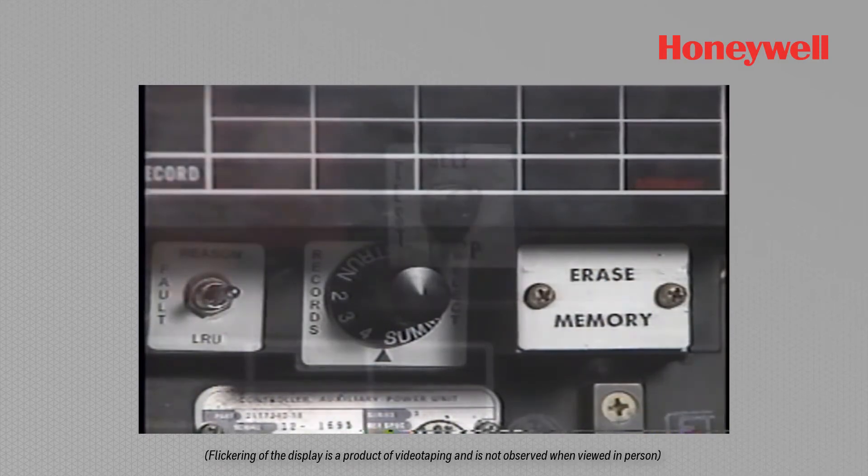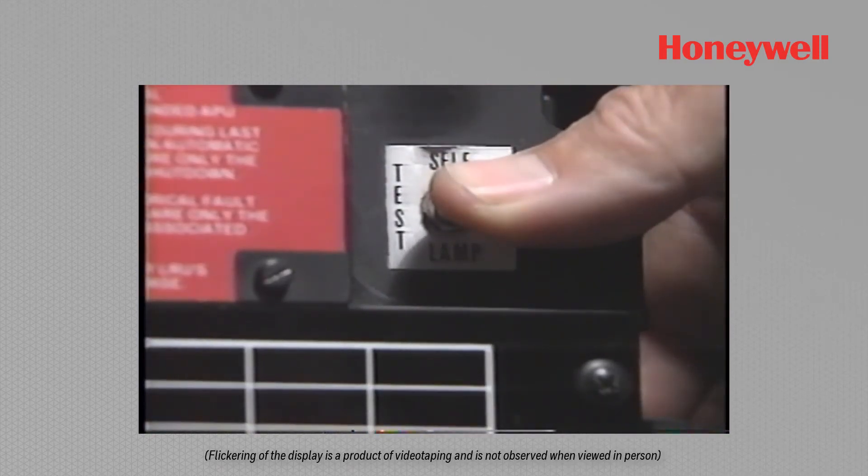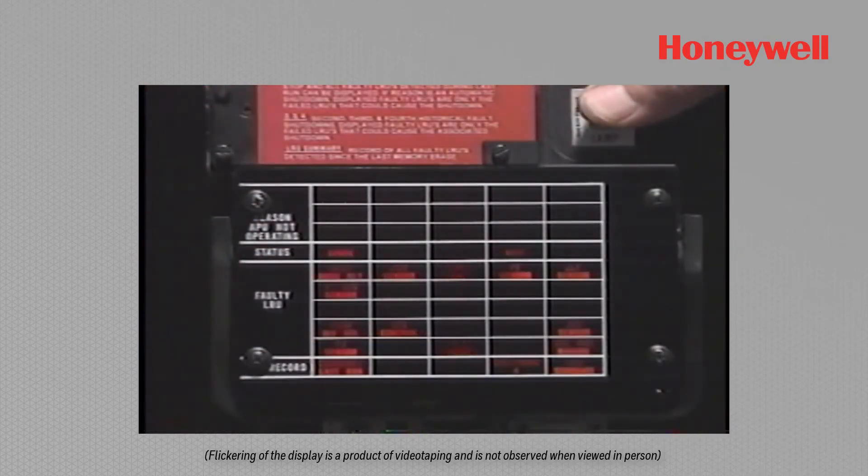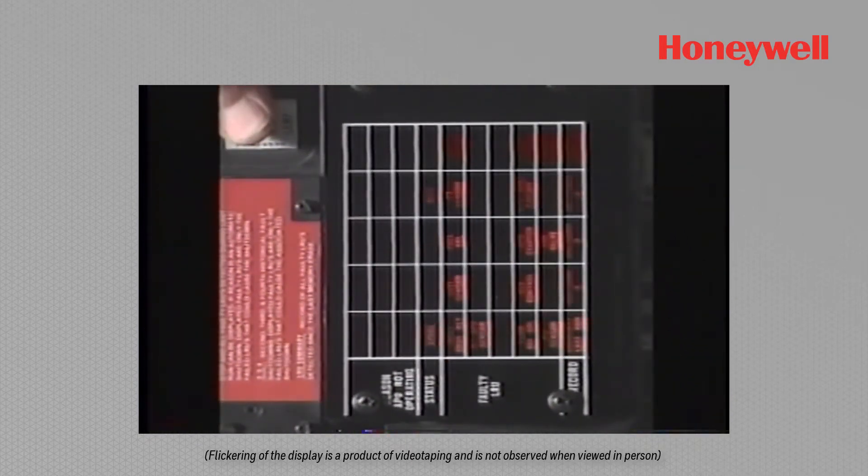With the APU still running, toggle to the lamp test position and hold down the switch to enter the mini-flag display mode. This will display mini-flags of the units that have failed during this particular run.